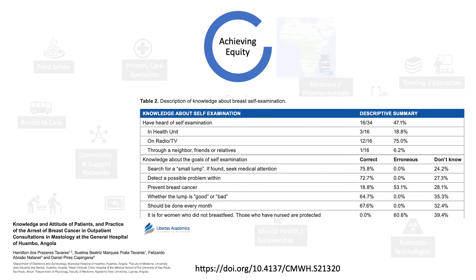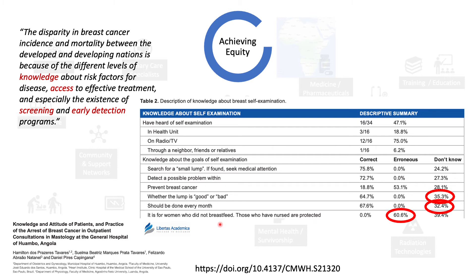To illustrate these challenges, consider a recent publication on the knowledge, attitude, and practice of breast cancer among outpatients in a hospital in Angola. Basic questions were posed to outpatients, and many breast cancer patients didn't know much about whether a lump was concerning, or the relationship between breastfeeding and the need for self-examinations. A key quote from the paper: the disparity in breast cancer incidence and mortality between developed and developing nations is due to different levels of knowledge about risk factors, access to effective treatment, and especially the existence of screening and early detection programs.